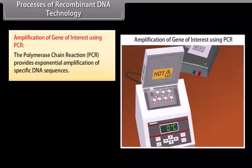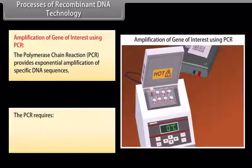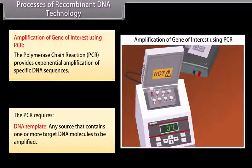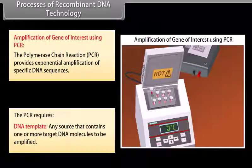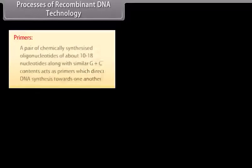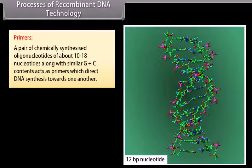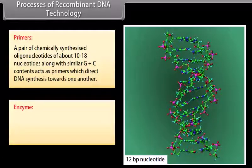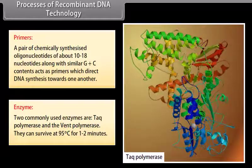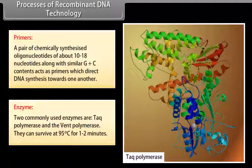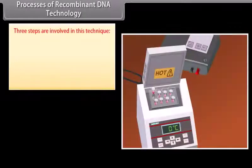Processes of recombinant DNA technology. Amplification of gene of interest using PCR. The polymerase chain reaction PCR provides exponential amplification of specific DNA sequences. The PCR requires DNA template - any source that contains one or more target DNA molecules to be amplified. Primers - a pair of chemically synthesized oligonucleotides of about 10 to 80 nucleotides along with similar G plus C contents act as primers with direct DNA synthesis towards one another. Enzyme - two commonly used enzymes are Taq polymerase and the vent polymerase. They can survive at 95 degrees Celsius for 1 to 2 minutes. Three steps are involved in this technique.